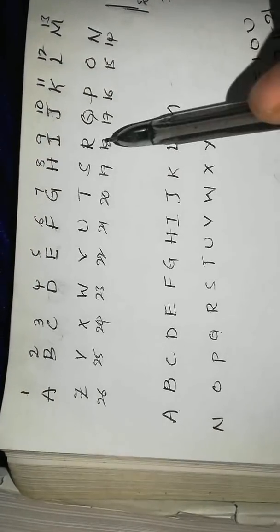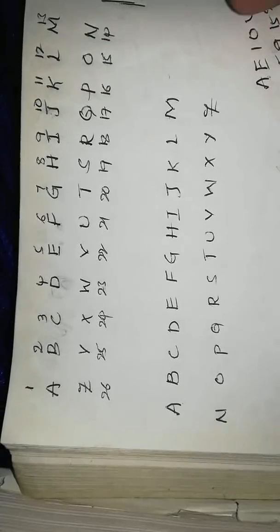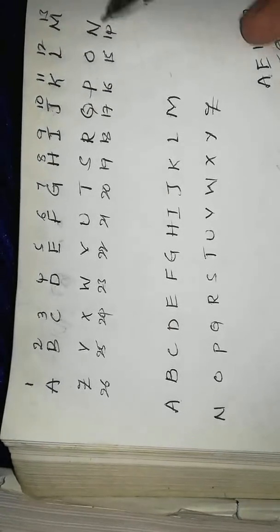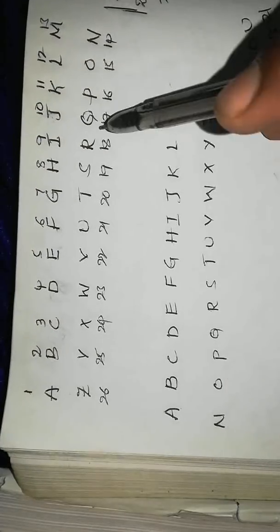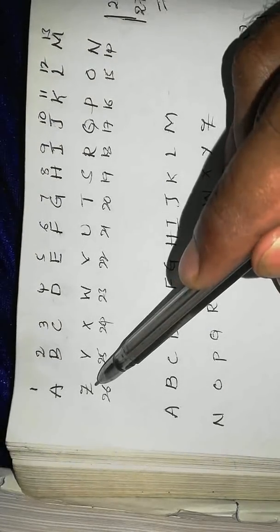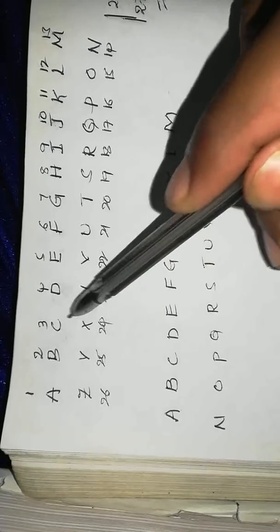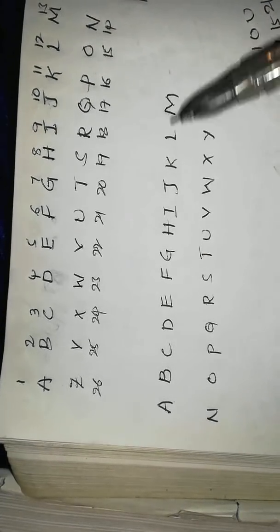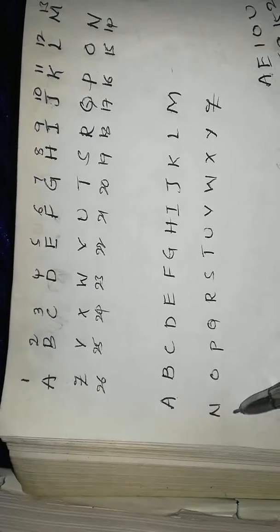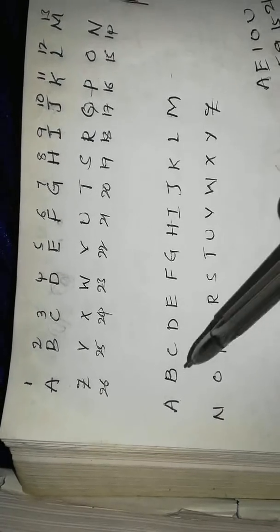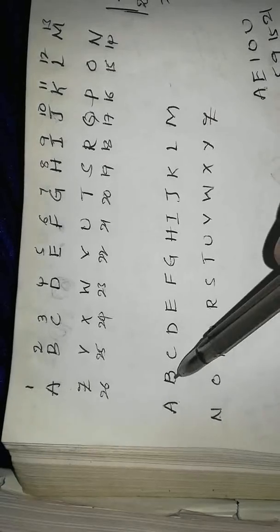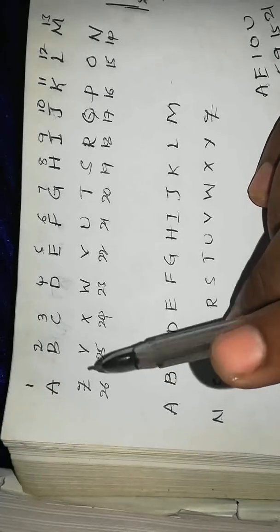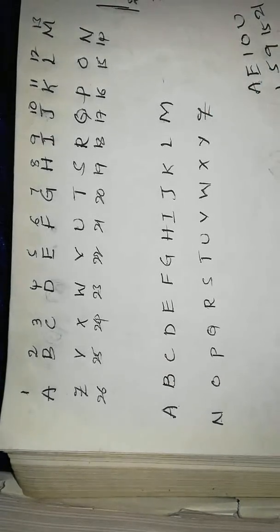The most important thing is that we must arrange all of them. We will arrange A to M, and it will be parallel to A to Z. Let's show A to M — the numbers are very important.